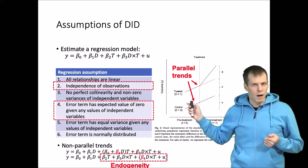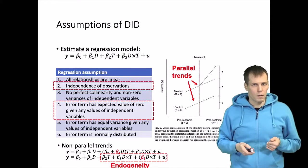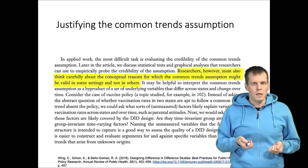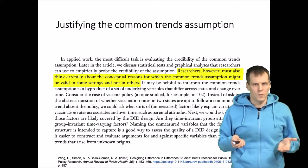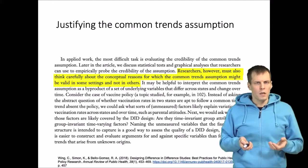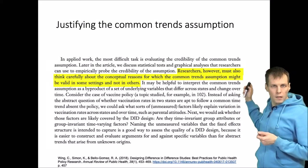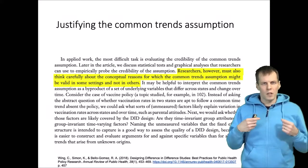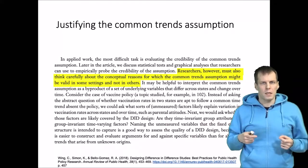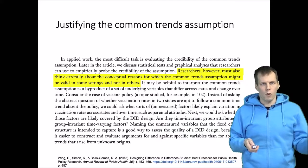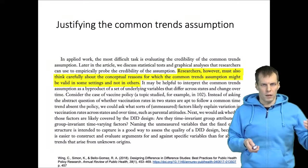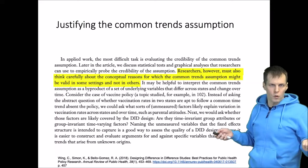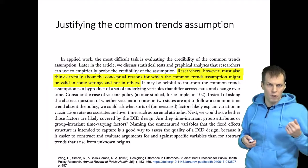Parallel trends must be justified, and the non-independence violation must be dealt with. The parallel trends assumption can be justified in two ways — and generally you should do both. First, provide a conceptual argument based on theory explaining why trends should be parallel. Think about what causes differences in trends and whether those causes differ between your treatment and control groups. Wing's article gives a good explanation of how to argue the common trends assumption conceptually.